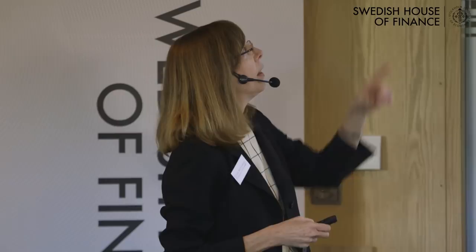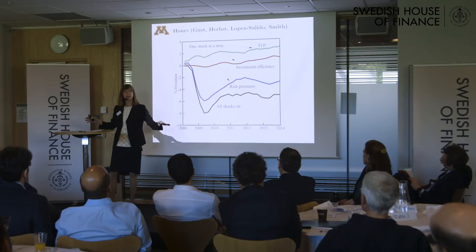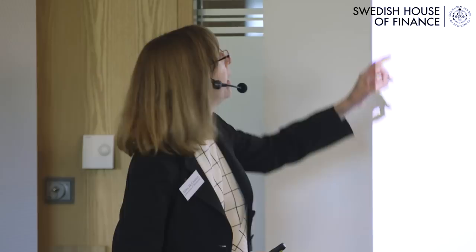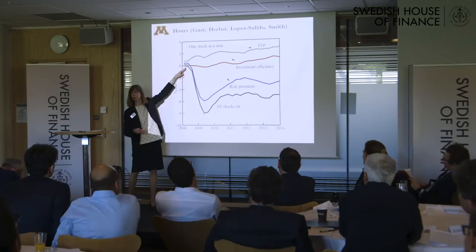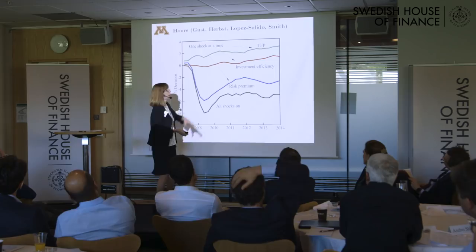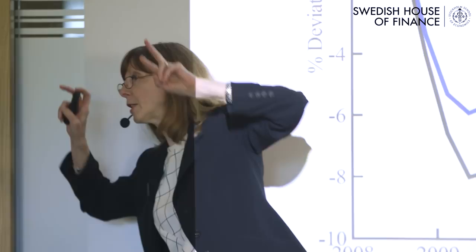Ours, by Gust, Herbst, Lopez, Salido, and Smith, who are doing state-of-the-art nonlinear estimation — the whole thing, adding the zero lower bound. This is serious stuff. Here it's a different picture — just a time series. If I put all shocks on, that's the black line. If I use only TFP, only a shock to investment, or only risk premium, you get the other lines. You can see the blue line — something called risk premium is making up a lot of the difference.